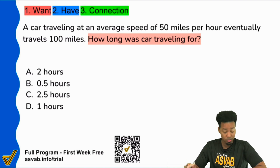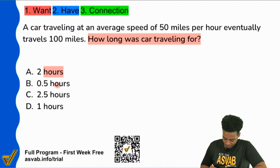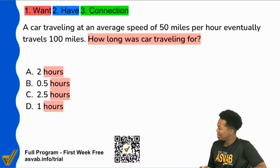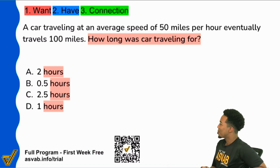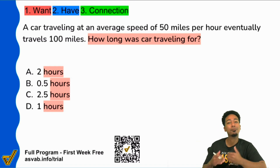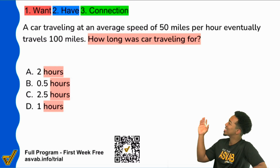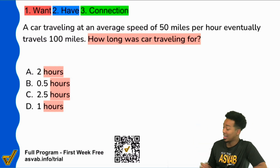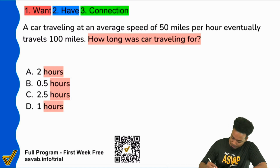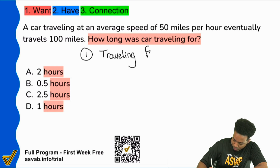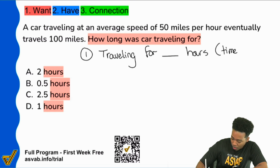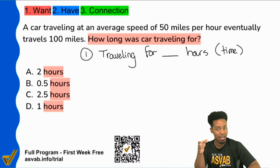Including answer choice D, where it should be singular, not plural — nice mistake. So with that, we're going to notice that we're looking for time. The answer choices' units are hours. So step one: the car was traveling for blank hours. We're looking for time. Keep a little mental note of that, so that when you go into the information, you're going to pull all of the information you have.